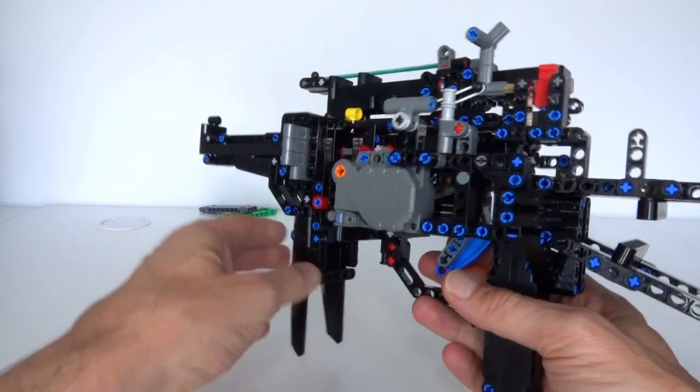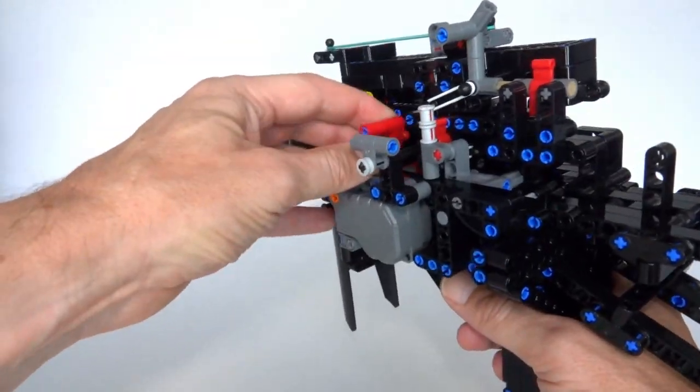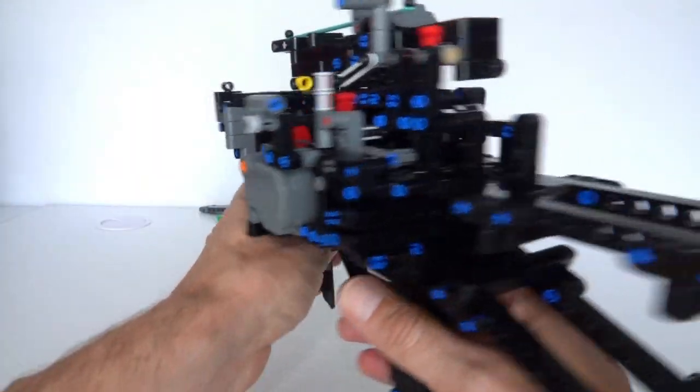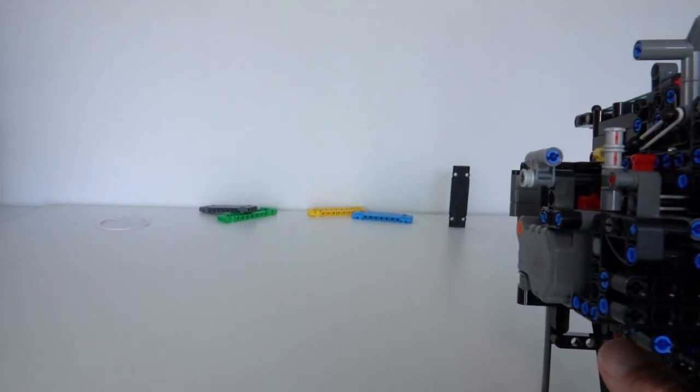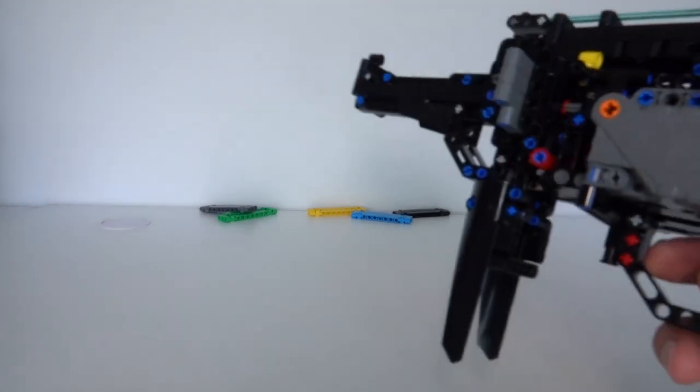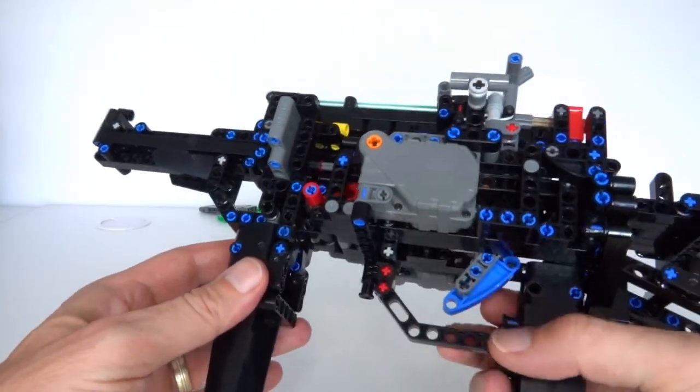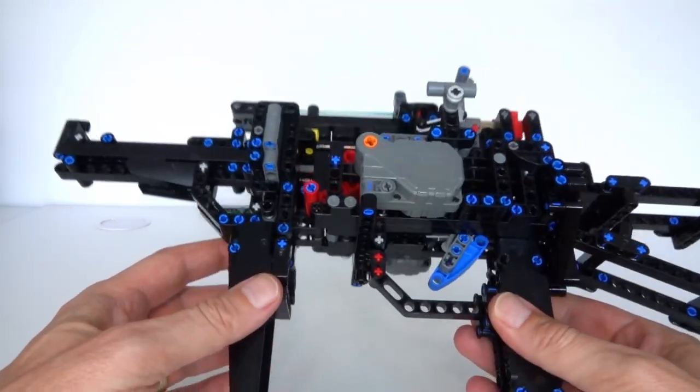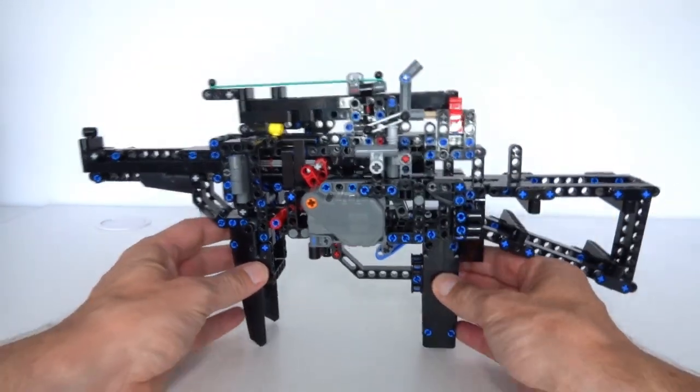All right, so that was my Lego Technic gun. I'll just give you one last demonstration of it firing. We just reload. We put a new bullet in and line up the shot. And bang, there we go. Last man standing. Hope you enjoyed this video. Please like and subscribe and thanks for watching. We'll see you next time. Bye.